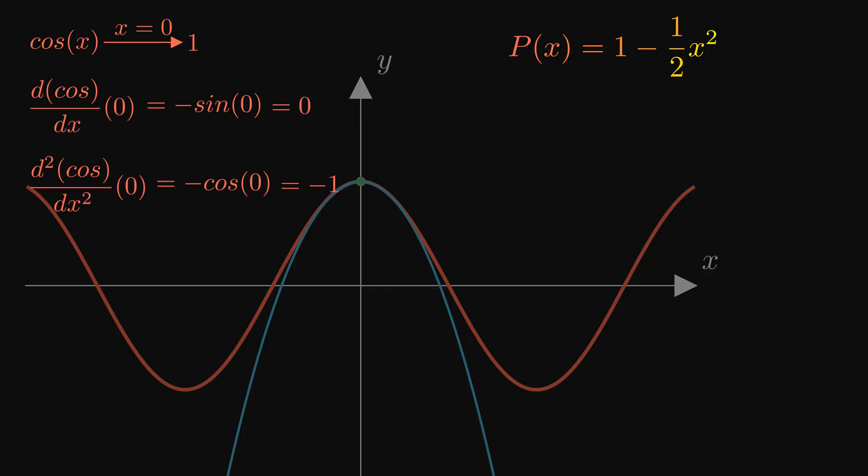Let's add one more term, a cubic term, dx cubed. We'll make sure the third derivative of the polynomial matches the third derivative of cosine. Notice something. When we take the third derivative, any terms with degree less than 3, like 1 minus 1 half x squared, disappear. In the end, it's always just the term we're interested in that remains.